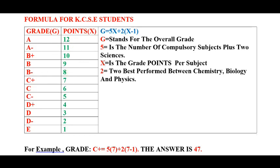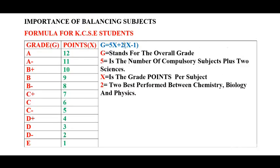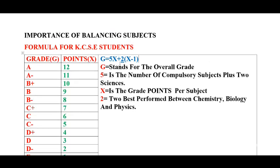The two in the formula stands for the best two performed subjects between chemistry, biology, and physics. For those who do three sciences, the formula picks the two best-performed sciences. That is why we have the two in the formula. So the formula is: G = 5x + 2(x − 1).